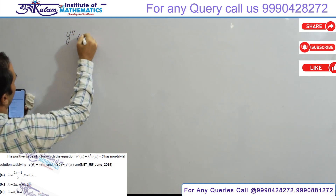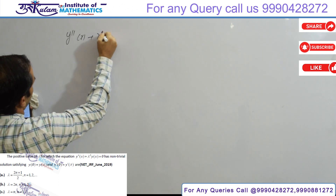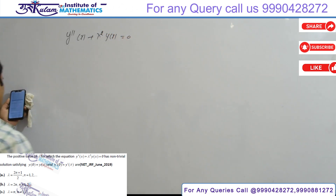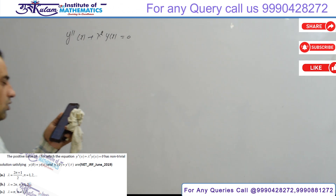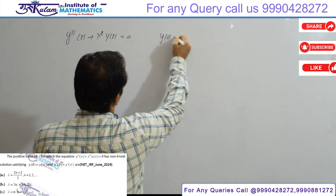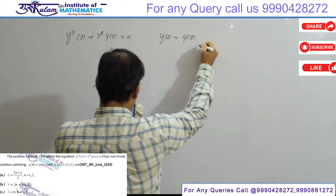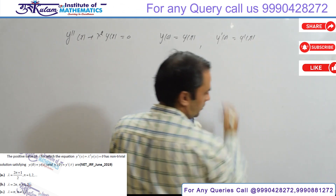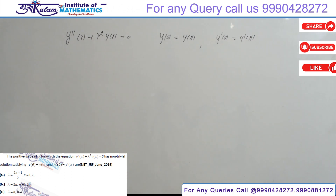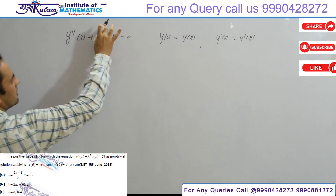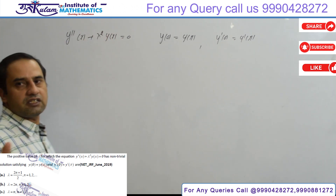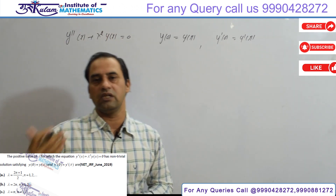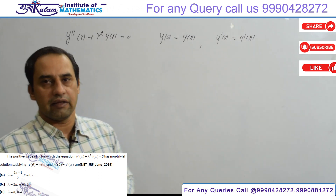For y''(x) + λ²y(x) = 0, it has a non-trivial solution with the conditions y(0) = y(π) and y'(0) = y'(π). This differential equation has a non-trivial solution, so λ² should be an eigenvalue, because if there is a non-trivial solution, the solution is an eigenfunction.